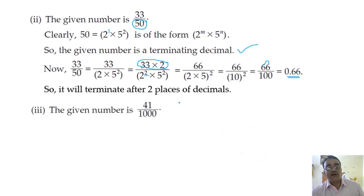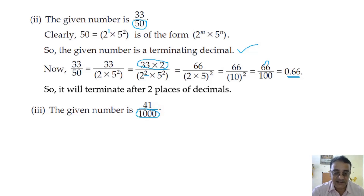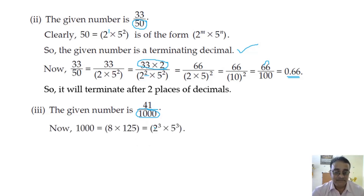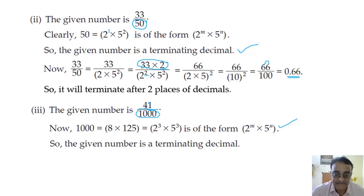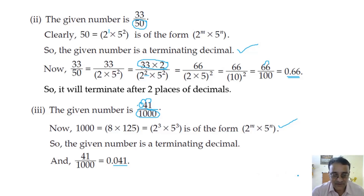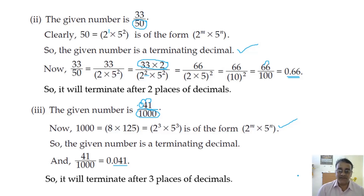Next question: 41/1000. This second part is easy. First we factorize 1000: it is 2³ × 5³, which is in the form of 2^m × 5^n. So the given number is a terminating decimal. Here the denominator is already an integral power of 10, so counting from the right: 1, 2 — the 3rd place has nothing, so we put 0 and place the decimal point. It terminates after 3 places of decimals.